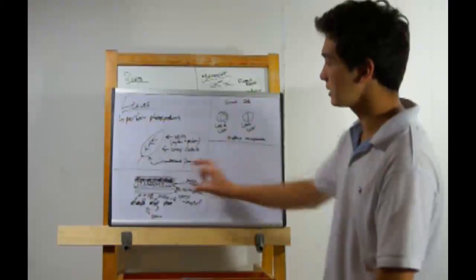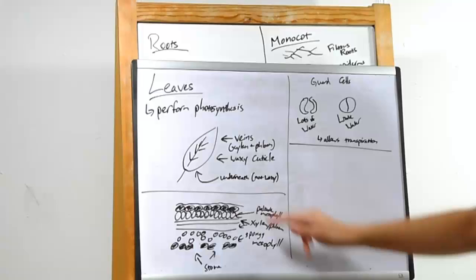Here is a cross-section of leaves. I know, biologists love cross-sections. Up on top, we have the waxy cuticle again, and on both sides, we have the epidermis.